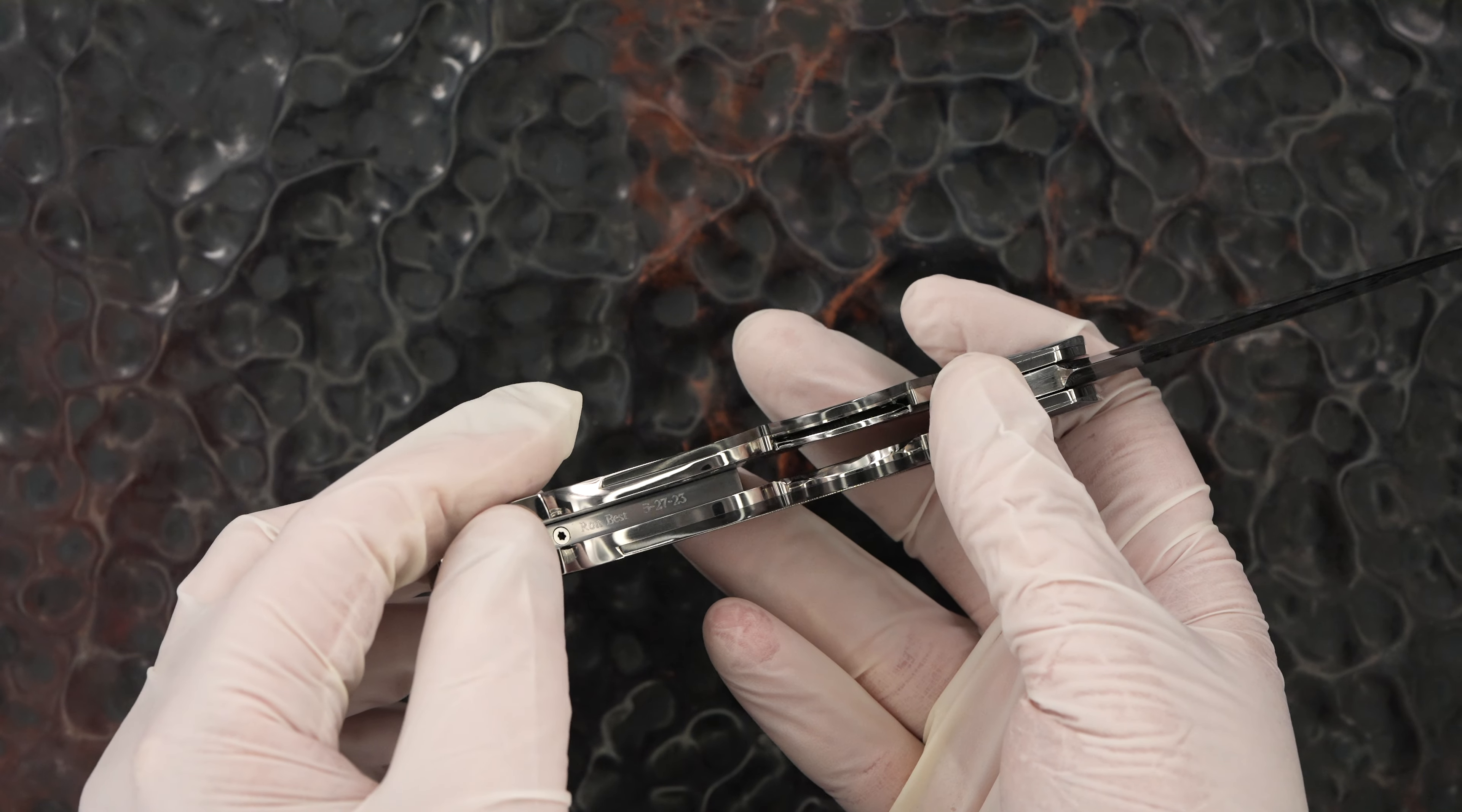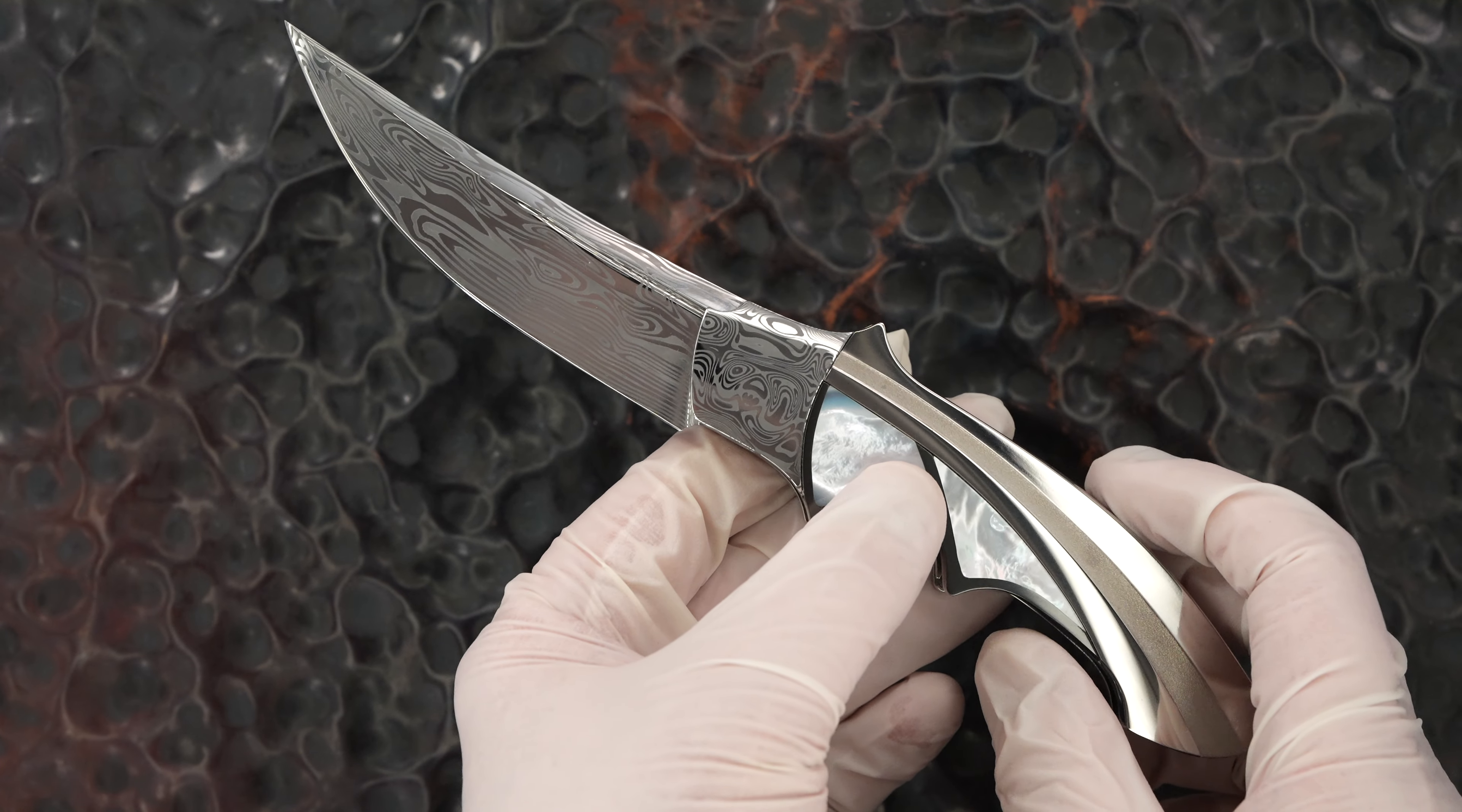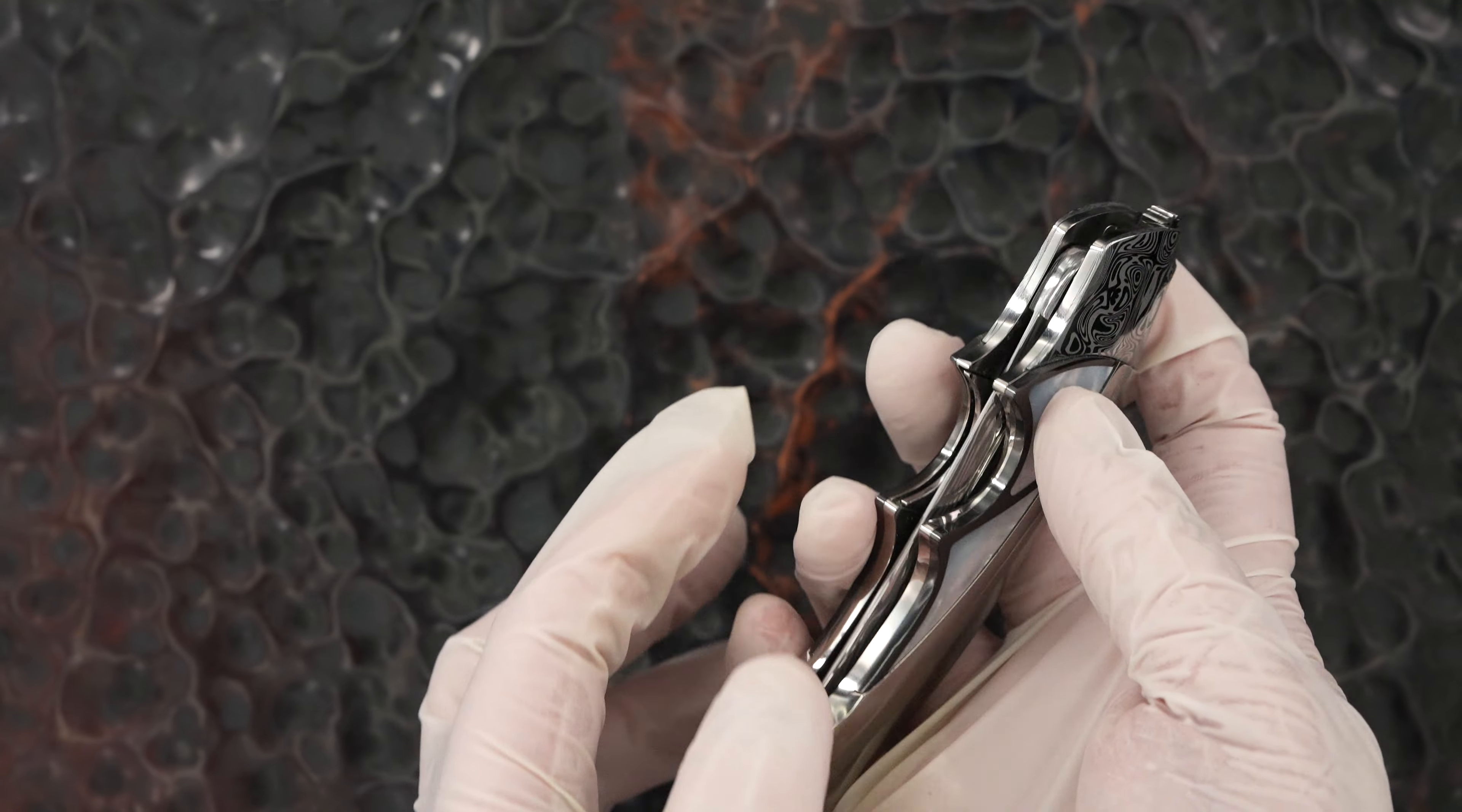This is signed Ron Best 527 23. Again, it's from the blade show. The paradoxes that I have are the first ones that Ron has released to the public.